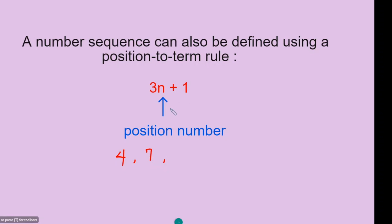We can also find the third term by putting n equal to 3: 3 times 3 is 9, and 9 add 1 is 10. We can also find the fourth number in the sequence by putting n equal to 4: 3 times 4 is 12, add 1 is 13. We can go on and on to find the numbers in the sequence list.